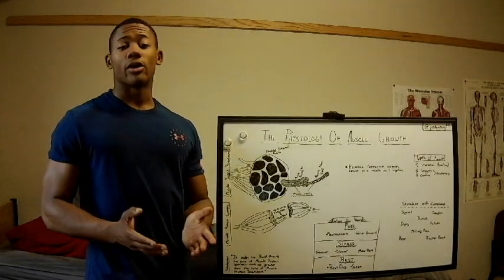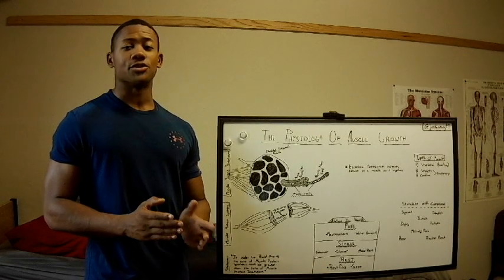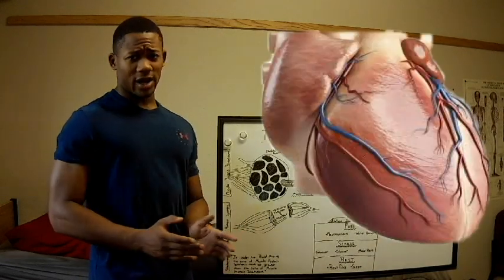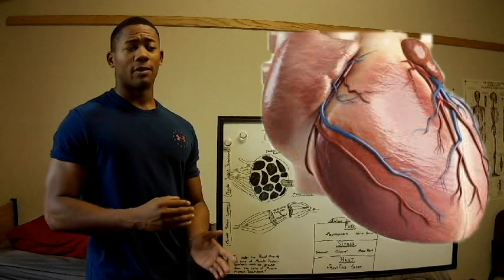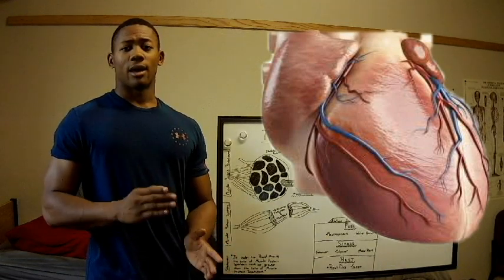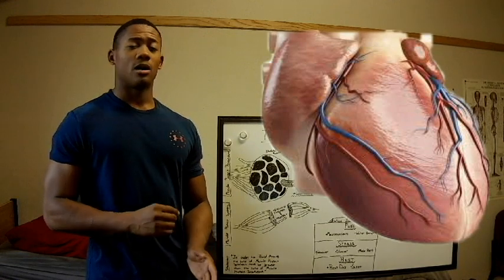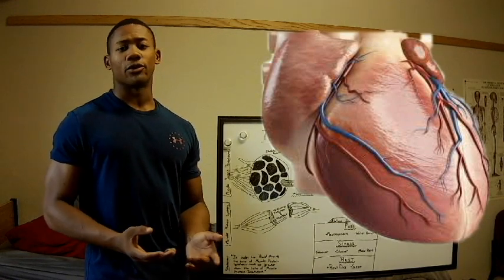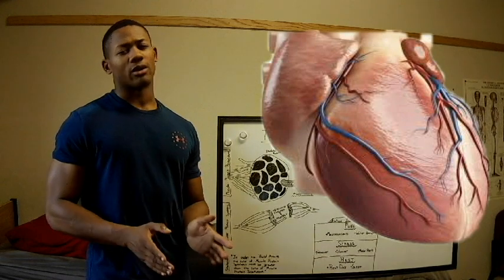Both smooth and cardiac muscles are involuntary muscle tissues. Like skeletal muscle, cardiac muscle is also striated. It constitutes mainly the walls of the heart and is sometimes referred to as the myocardium. Its main job is to pump blood throughout the body, and it can only be found in the heart.